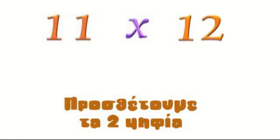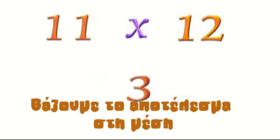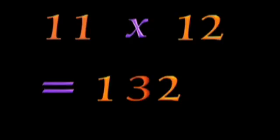Let's continue with 11 times 12. Look at the two digits of the number you're multiplying your 11 by, which for 12 are a 1 and a 2. Add the two digits, which is 1 plus 2, or 3. Put the 3 in the middle of the two digits of 12 — you get 132. 11 times 12 is 132.